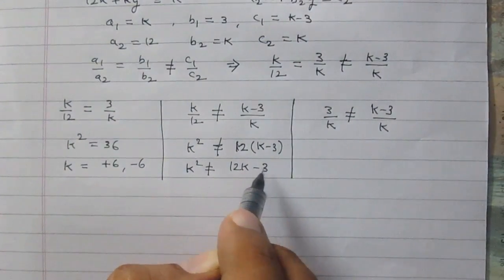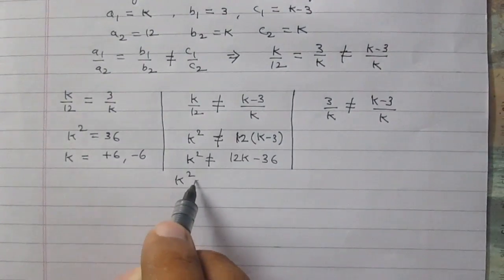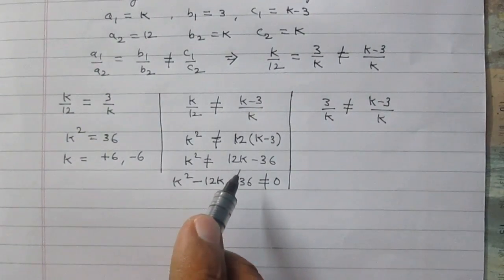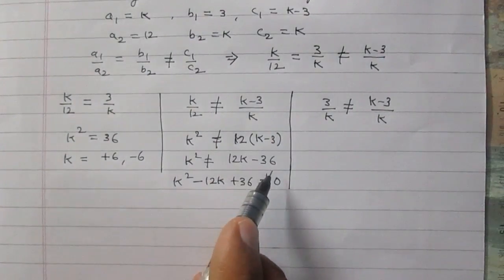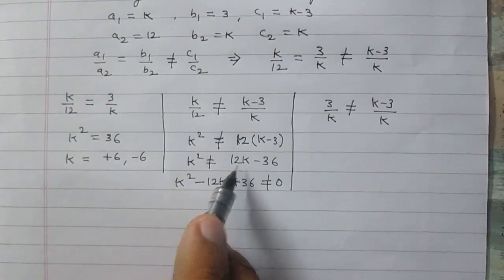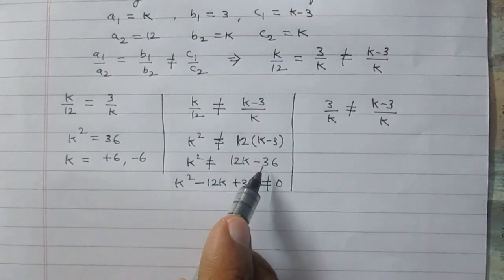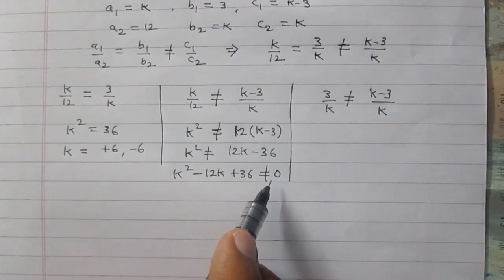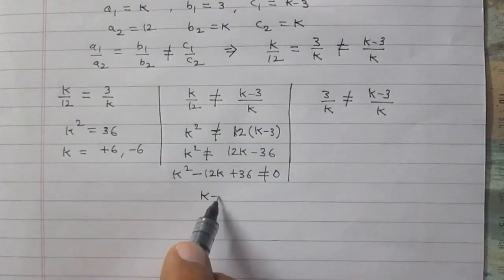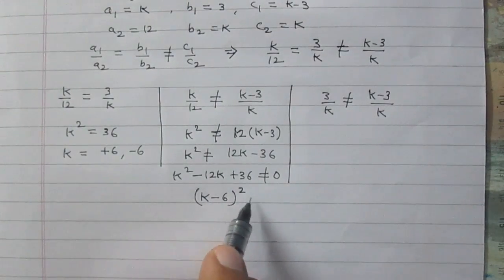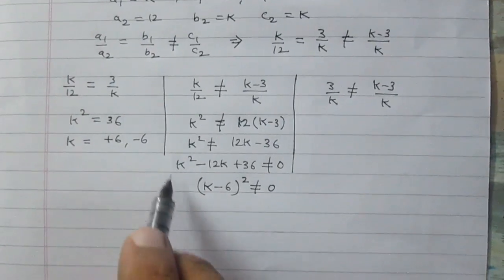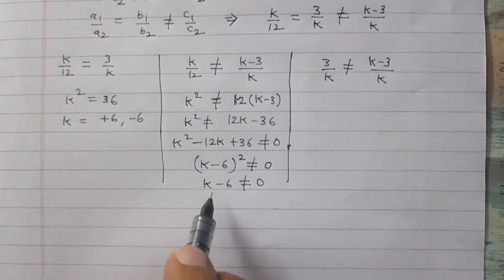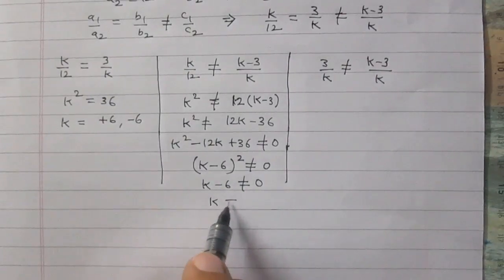From the second situation inequality, k² ≠ 12(k - 3), so k² ≠ 12k - 36, or k² - 12k + 36 ≠ 0. This is a perfect square: (k - 6)² ≠ 0, which implies k - 6 ≠ 0, meaning k ≠ 6.